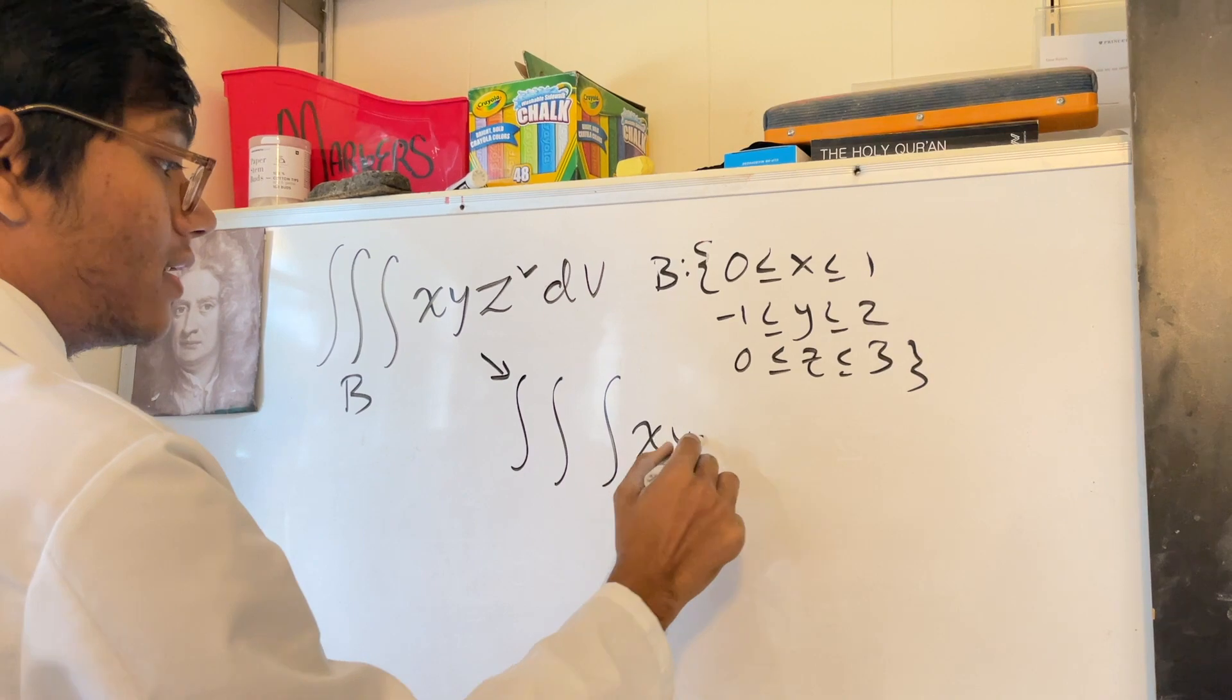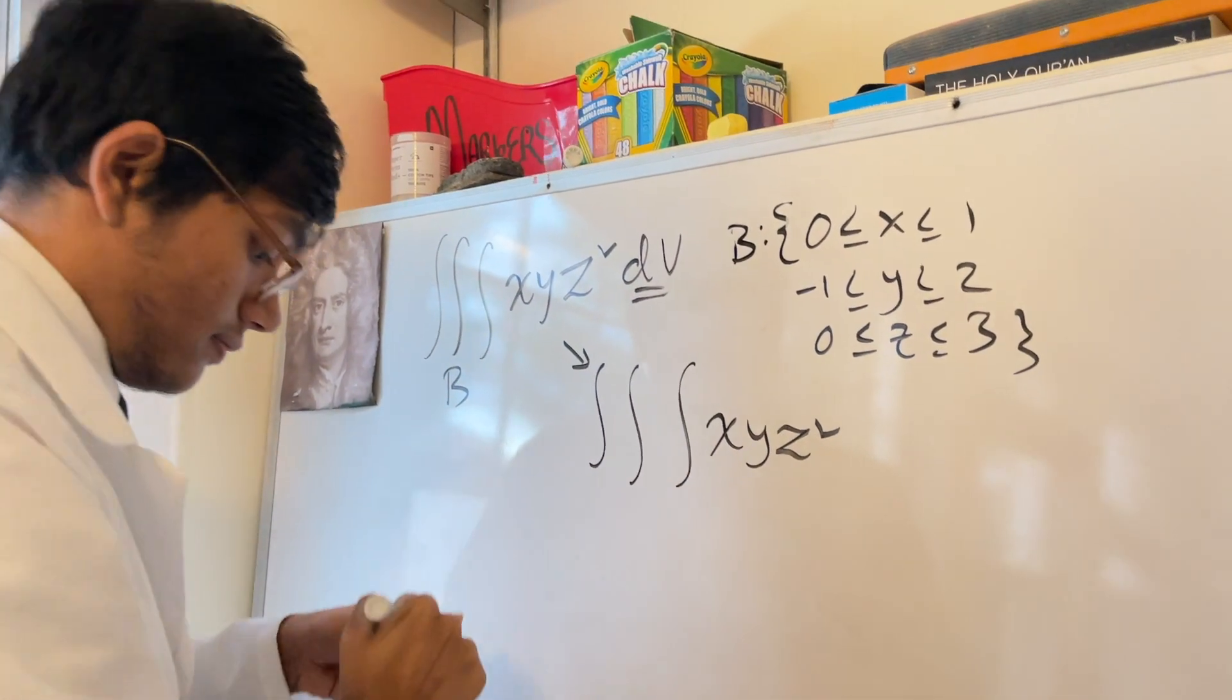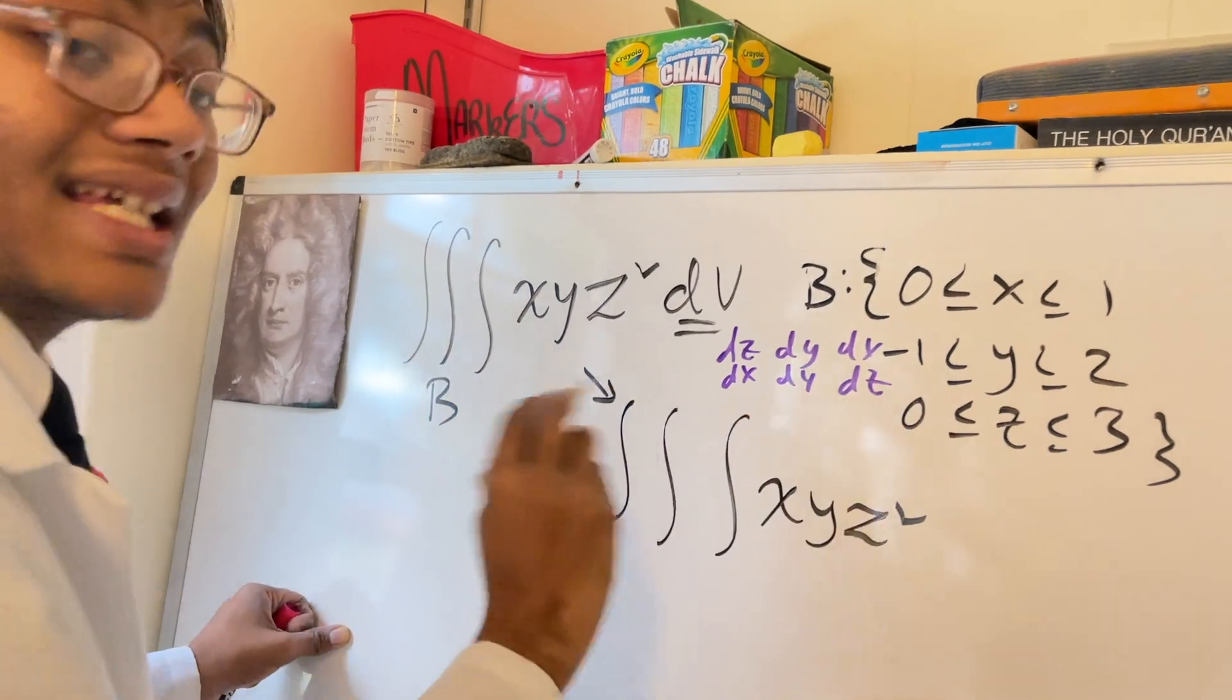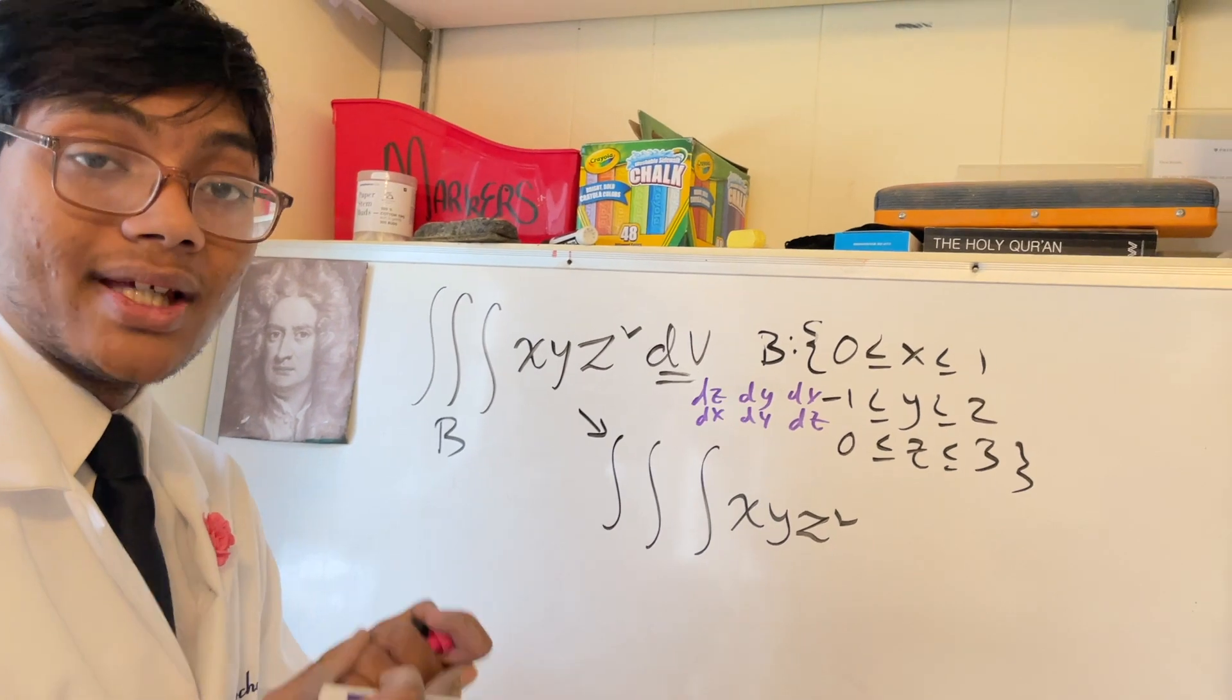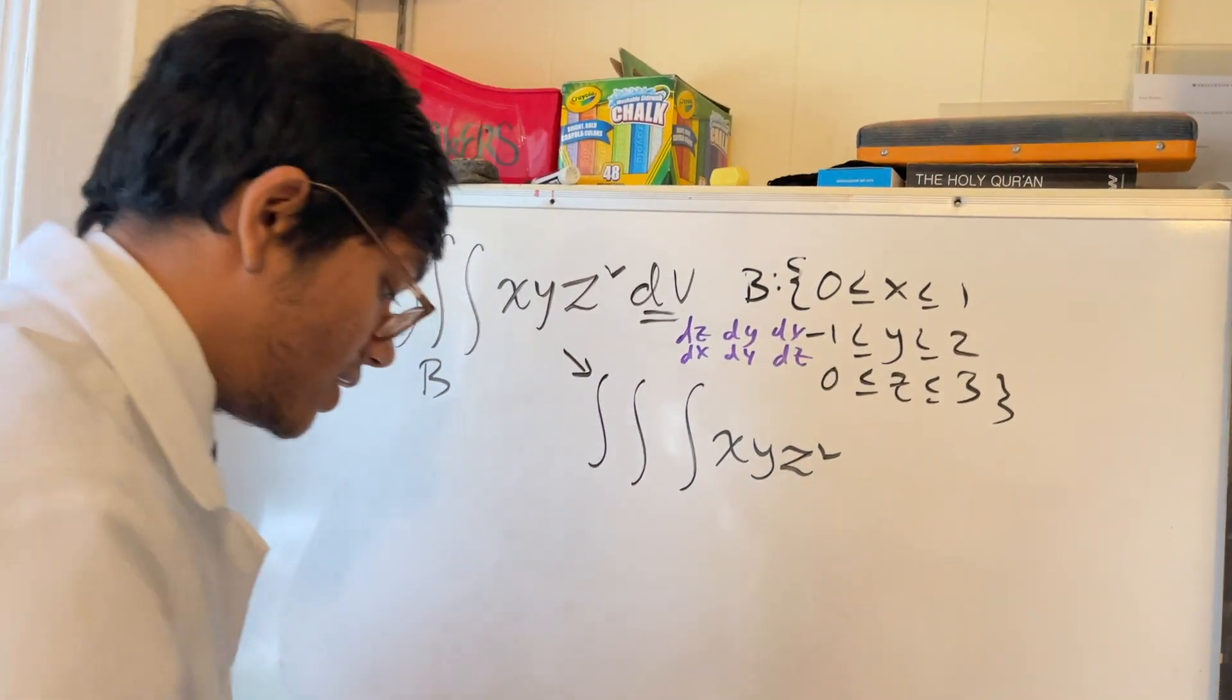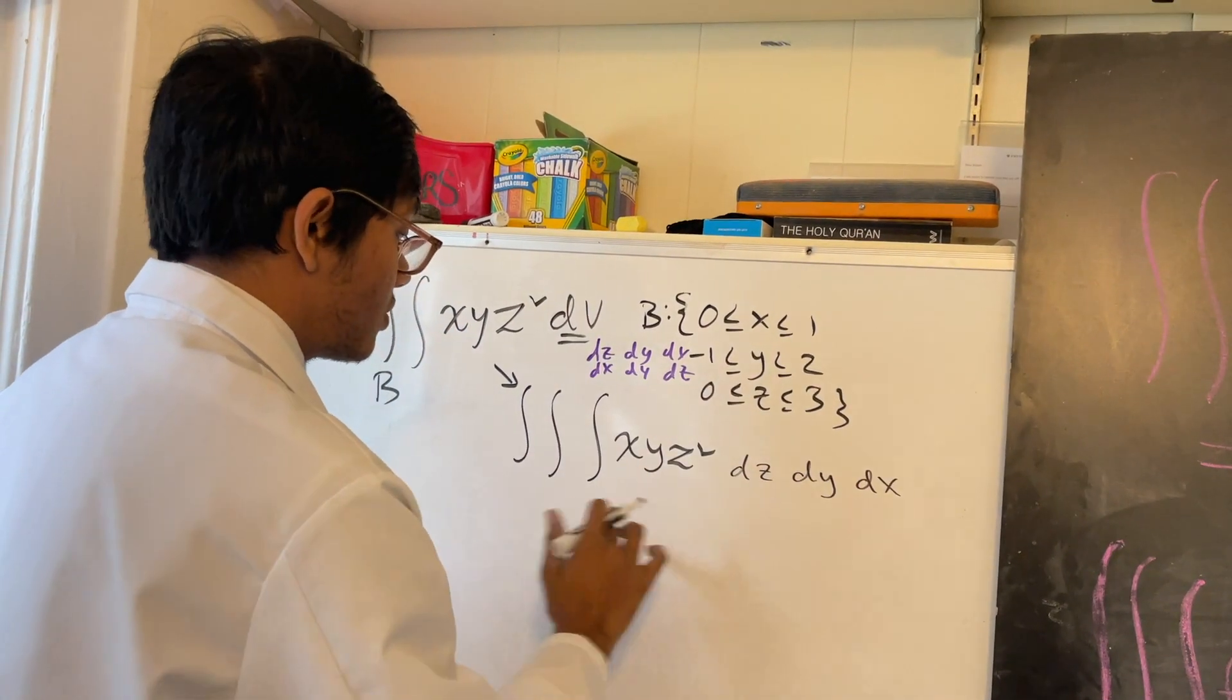So XYZ². Now dV, what can this be expanded as? It can be dz dy dx. It can become dx dy dz. There's six possible permutations of how you can integrate, and they're all going to give you the same answer. All you have to remember is you cannot just switch around the limits of integration unless you're integrating over a rectangularly simple region because of Fubini's theorem. Let's go ahead and integrate this with respect to dz dy dx. You can choose whatever order you want.